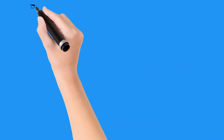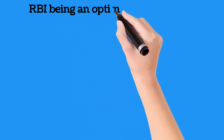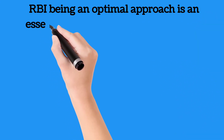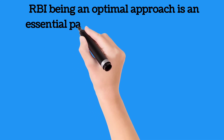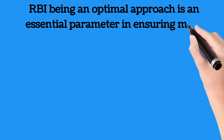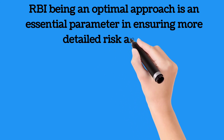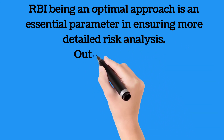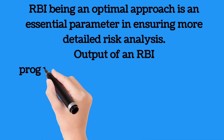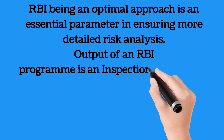Risk-based inspection, being an optimal approach, is an essential parameter in ensuring asset integrity as well as reliability of assets for more detailed risk analysis. The output of a risk-based inspection program is an inspection plan which should define various inspection methods, extent of inspection techniques including non-destructive as well as destructive techniques, and inspection intervals necessary for risk mitigation.